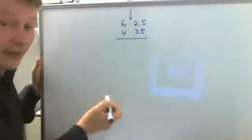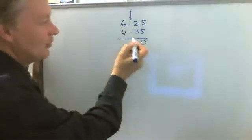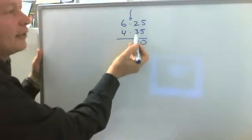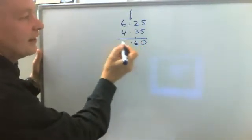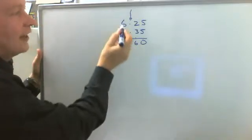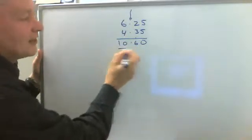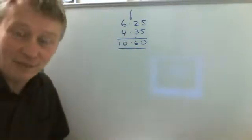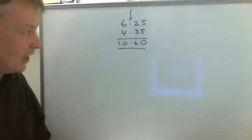So if I add those two together, I've got five add five is ten, put the zero there, one to carry, three, four, six, and then nothing to carry, six and four is ten. So in other words, I now have ten pounds sixty.